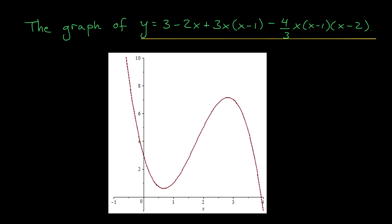To wrap up this video I've included the graph of our interpolating cubic polynomial. You can see from the graph that this polynomial fits the bill. Our four data points — (0, 3), (1, 1), (2, 5), and (3, 7) — all lie along this curve. You gotta admit, that's a little bit cool.